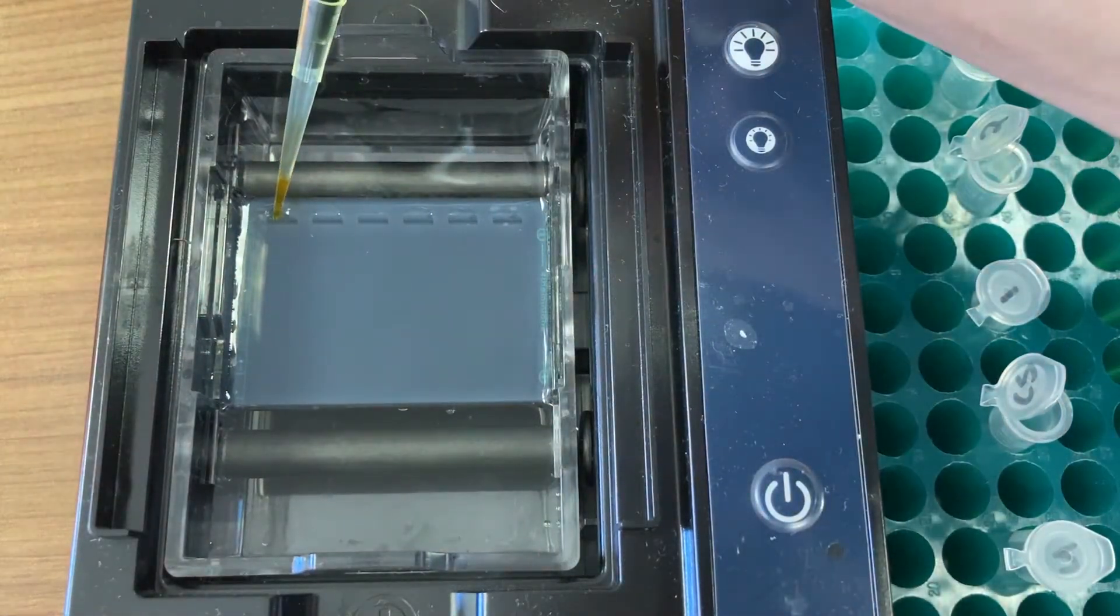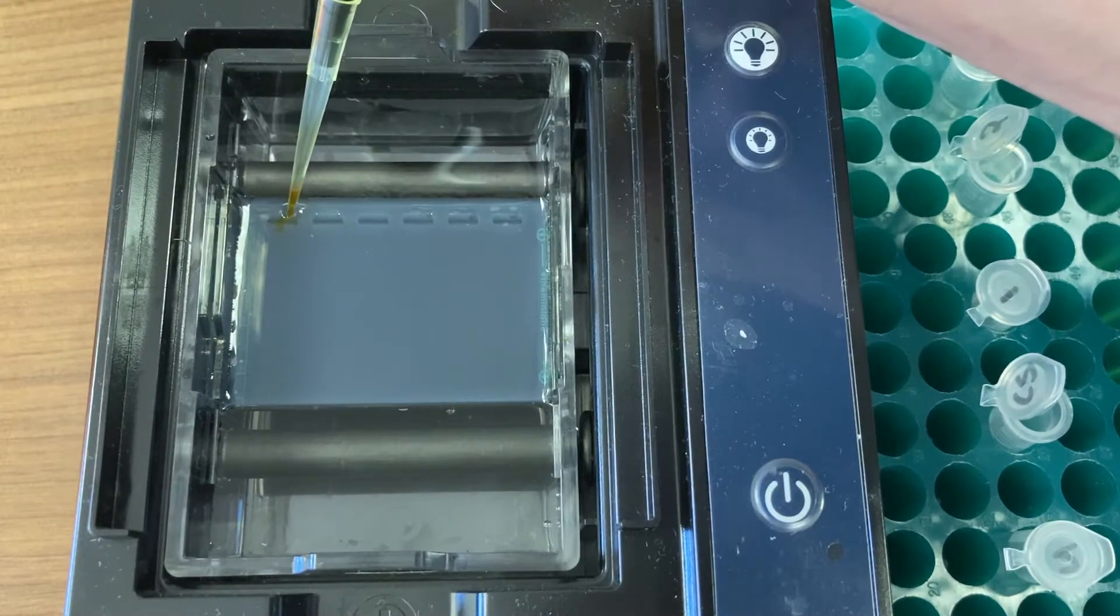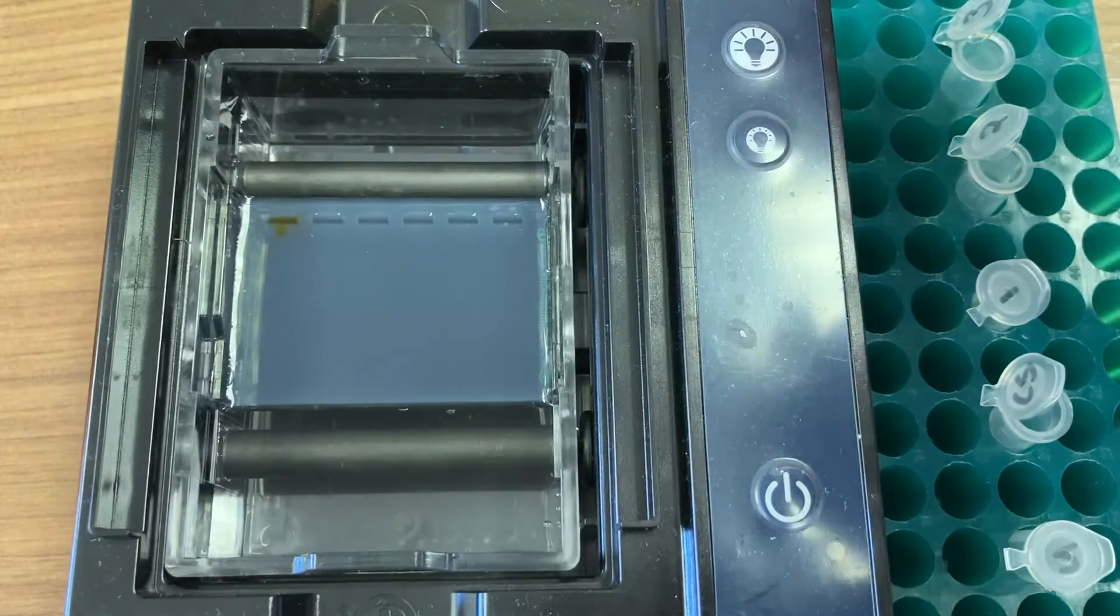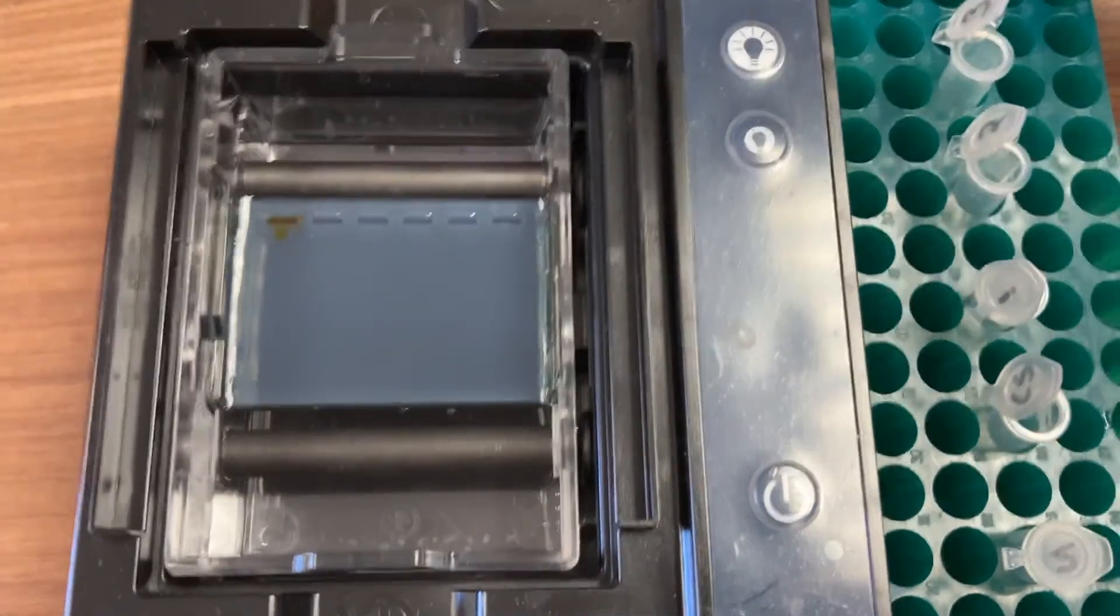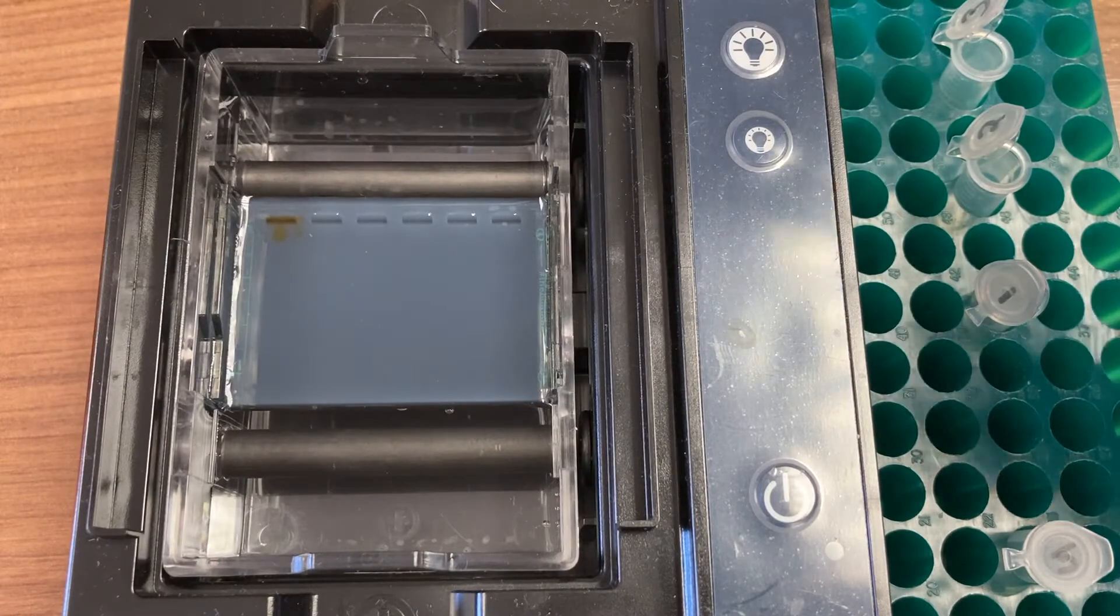You're going to use your micropipette to add 15 microliters for each sample. Make sure you switch your tips in between each sample so we don't want to mix up the DNA. As we continue loading our samples onto the agarose gel, we want to share a bit about this electrophoresis system.